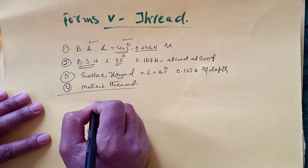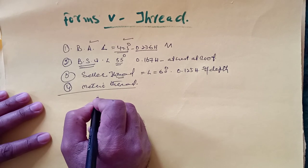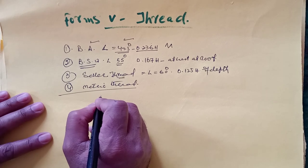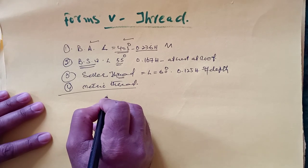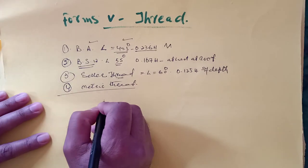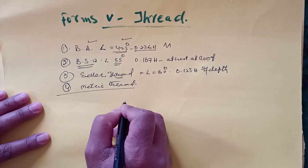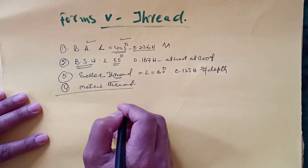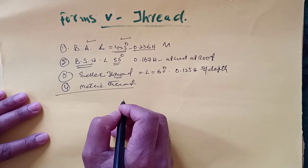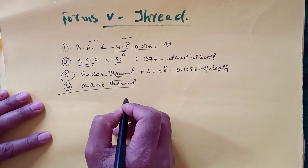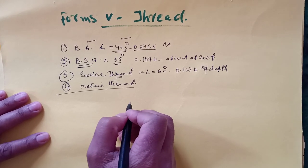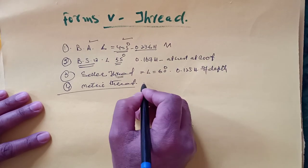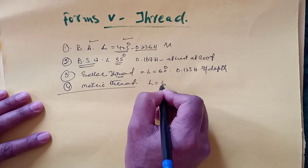Metric thread - the Bureau of India standard has recommended the adaptation of unified screw thread based on a metric system as a standard form used in India. It has designated it as a metric screw thread with ISO profile. In this system, instead of fixing a number of threads per unit level, the pitch of the thread is fixed. Here the angle of thread is also 60 degrees.